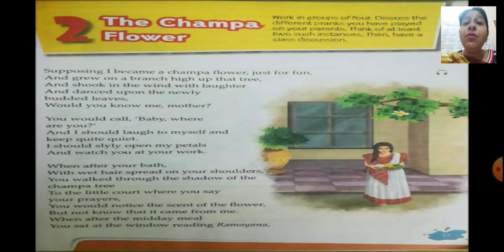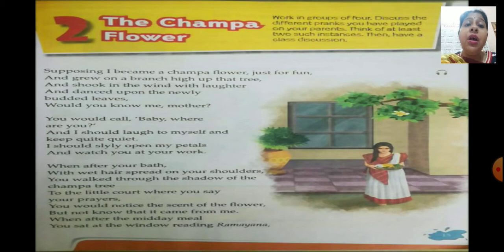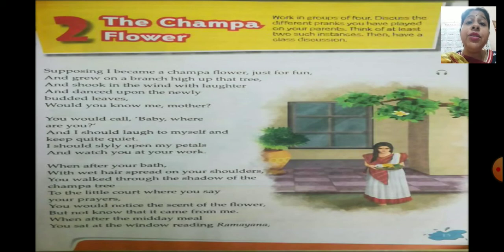So beautiful! After mother takes her bath, she opens her hair falling on her shoulders and comes out with things for offering prayers at the court — the open place in front of the house. She passes from below the shadows of the Champa Tree, goes to offer prayers, and can smell the sweet scent of the flower but is unable to find her child.